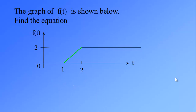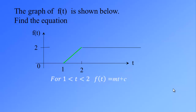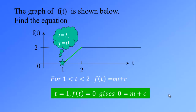The most difficult piece is the straight line for t between 1 and 2. Since we know this is a straight line, the equation should be y = mt + c. To find m and c, we need the coordinates of two points. First, we select the point at t = 1, f(t) = 0. Substituting into the equation gives 0 = m + c.